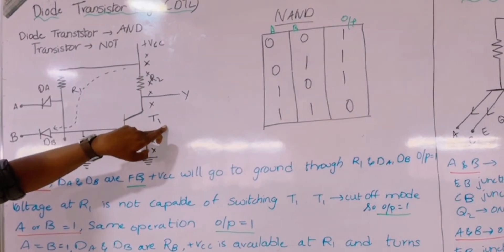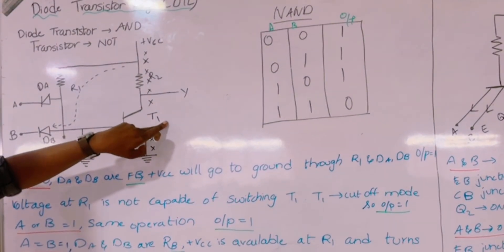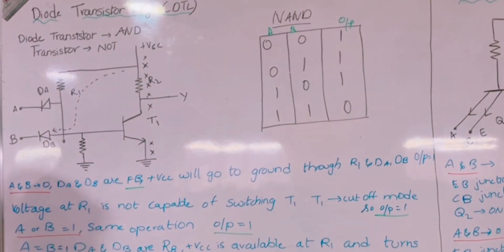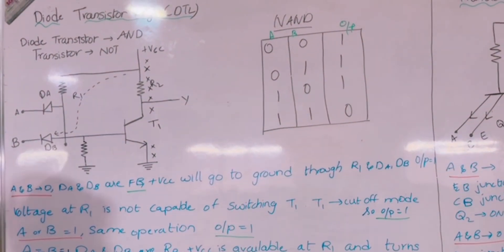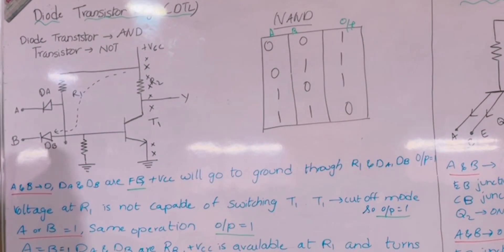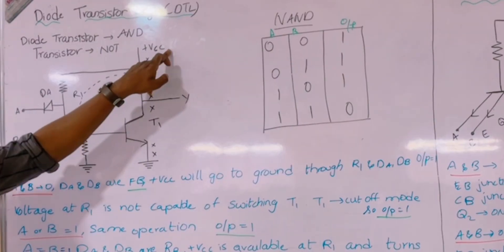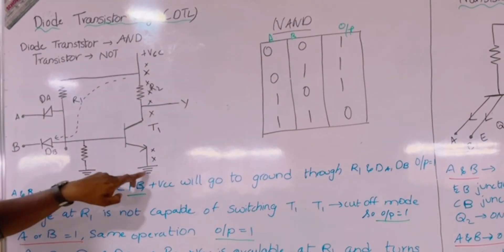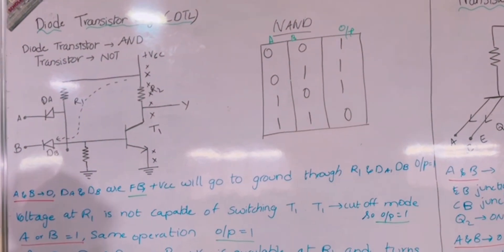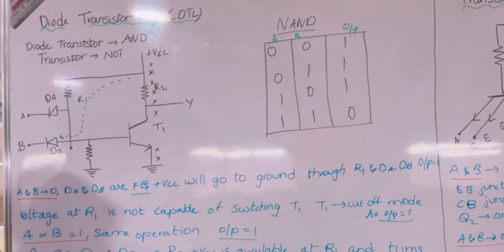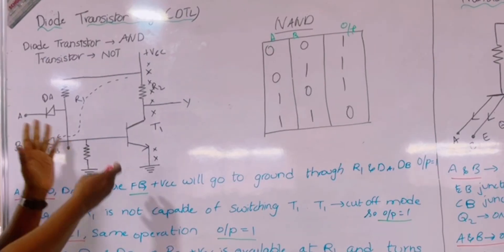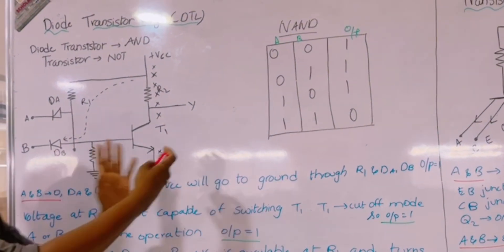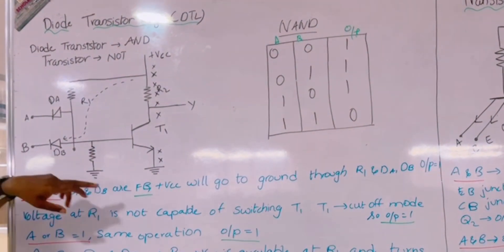We have transistor T1, and resistors R1 and R2 to obtain the voltage drop. VCC is the power supply. We also have two diodes. Now we can see how this circuit is going to perform the function of an AND gate.